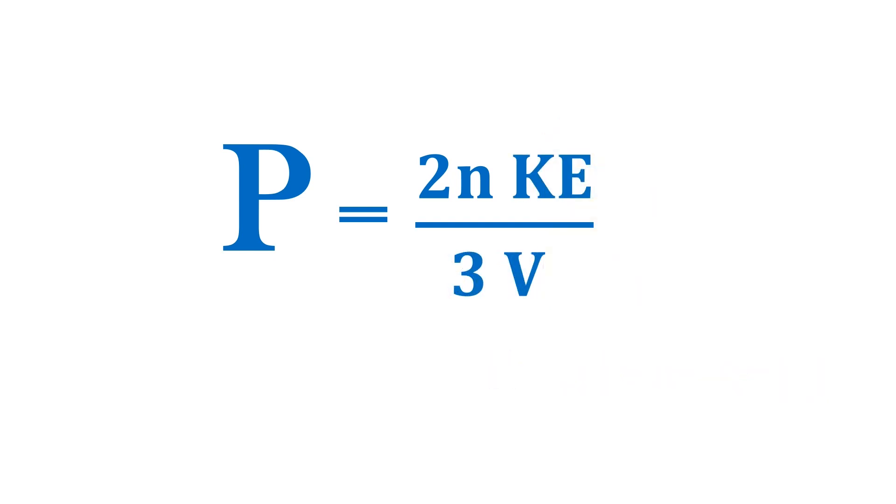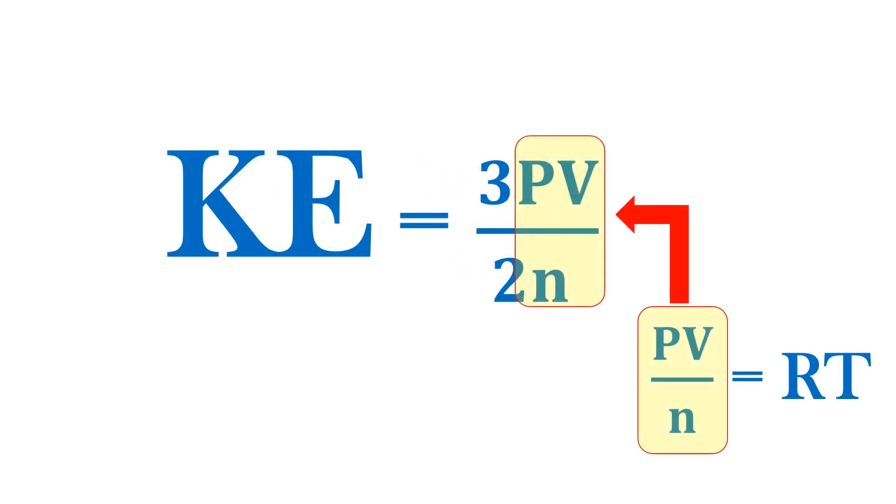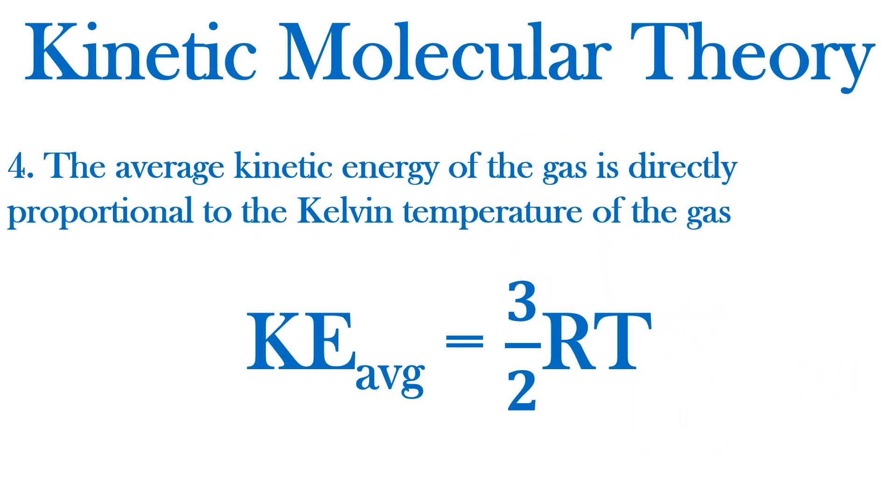I'll rearrange to solve for the kinetic energy. And recall from the ideal gas law that PV over n is equal to RT. We can substitute this term into the kinetic energy equation and get our final equation. This brings us back to the fourth postulate of the kinetic molecular theory. The average kinetic energy of a gas is directly proportional to the Kelvin temperature of the gas, and equal to 3 halves RT.